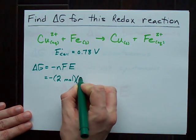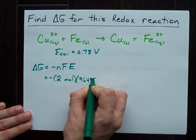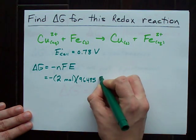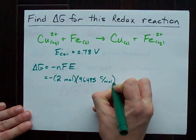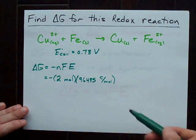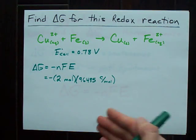F is the Faraday constant, 96,485 coulombs per mole. This is the amount of charge that one mole of electrons carries with it.